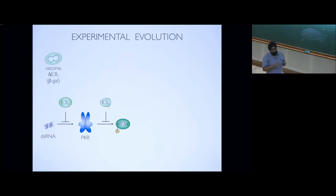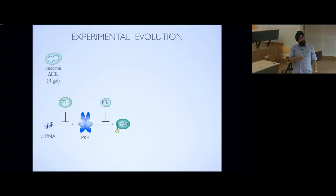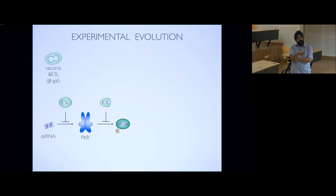I told you yesterday exclusively about K3L, which is a mimic that blocks PKR phosphorylation of EIF2-alpha. But vaccinia virus and other pox viruses actually have another protein called E3L — one of those proteins that can hide and sequester double-stranded RNA to prevent PKR activation. So they have a two-pronged approach to deal with the PKR challenge.